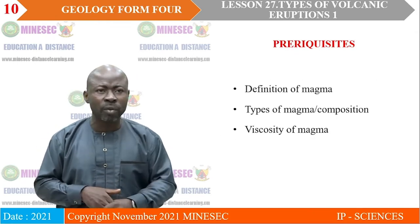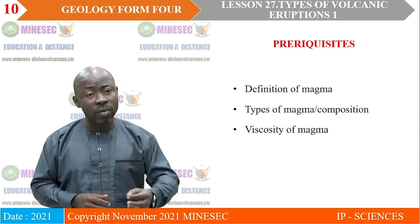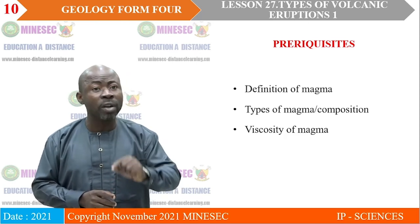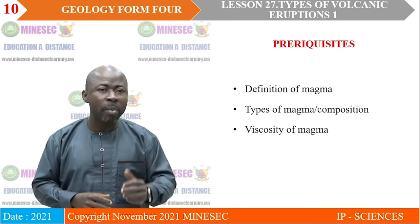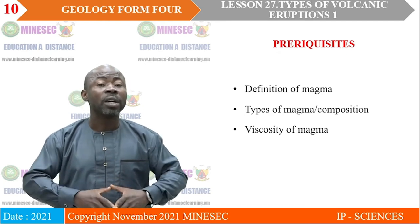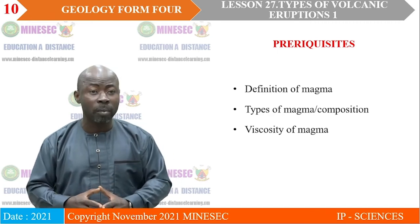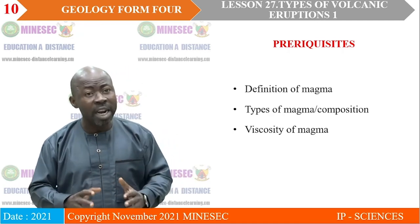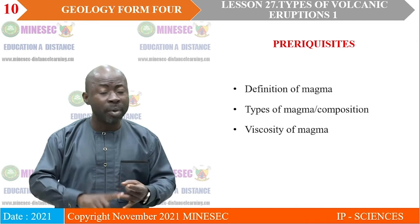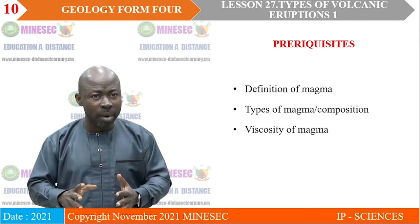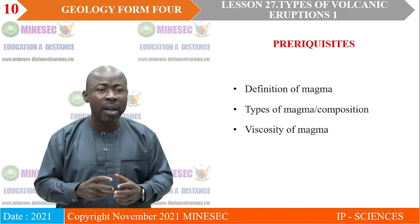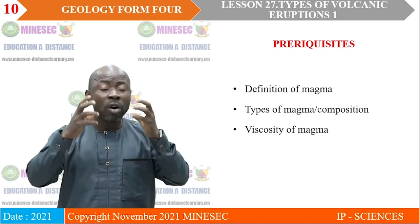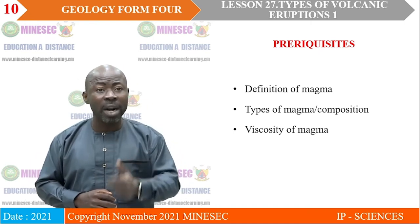To understand today's lesson, the definition and types of magma from previous lessons will give us better understanding, including the viscosity of magma. Remember, we said magma is a complex liquid melt formed within the Earth due to partial melting. When this magma gets to the surface of the Earth, it becomes solidified. There are different types of magma: acid magma, basic magma, intermediate magma, and acidic magma. The viscosity of magma is the resistance of that magma to flow.